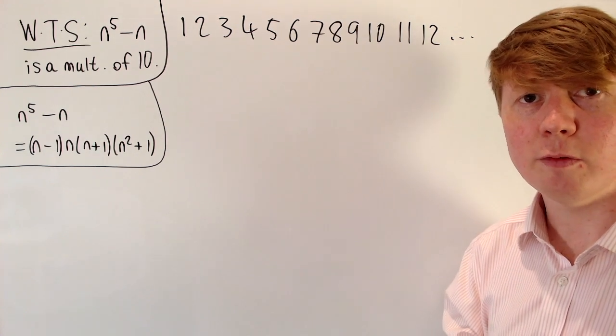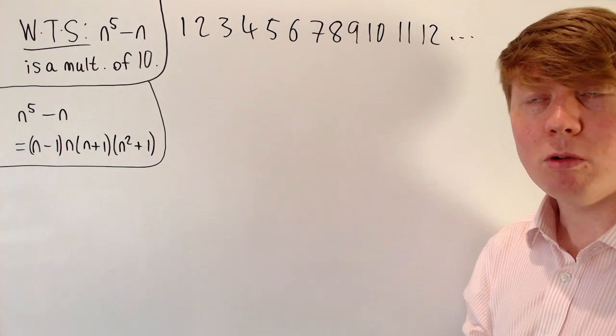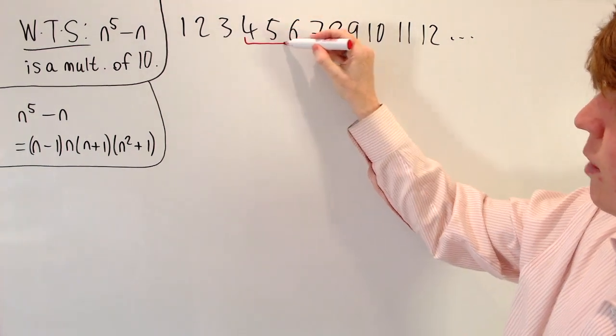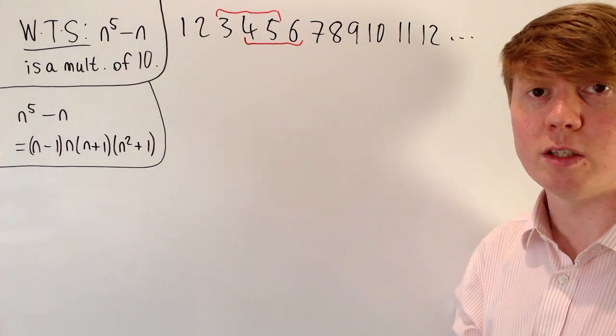So what about showing that it's a multiple of 5? So we've got these three consecutive integers. So we may well get, for example, 4, 5, 6, or 3, 4, 5. You may well get a multiple of 5 as one of these three.